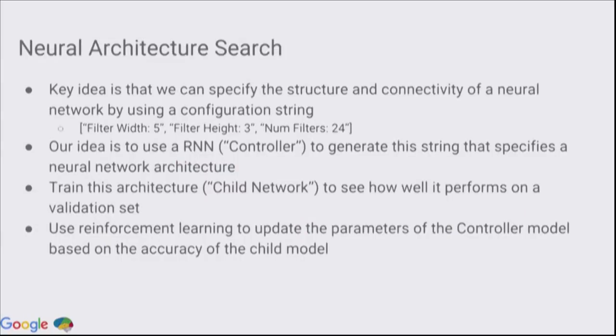We just recently started using more automated methods to design neural architectures. The key observation is that even though neural architectures can be complex, they can be thought of as programs or configuration strings. Suppose I have this configuration string called filter width of 5, filter height of 3, and number filters of 24. I can kind of reconstruct one layer in the neural net. The idea is to use an RNN to write down this configuration string. When you write down that configuration string, you need a parser to parse that configuration string to construct a neural network. Then you take that neural network and train it to the end and validate it on a validation set. Then you get a reward signal, and you use the reward signal to feedback into the controller so that the controller can improve over time.